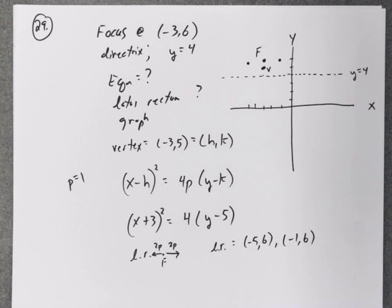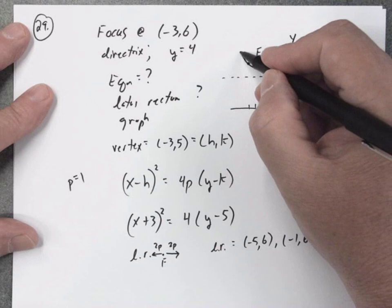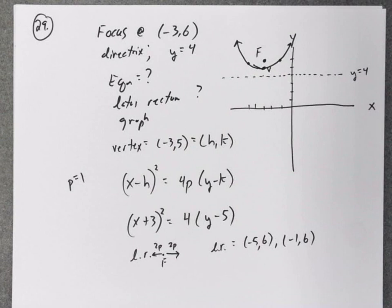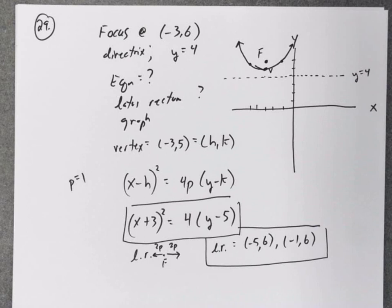I just want to check to make sure, and that is correct. So now, we can try and make a sketch of the parabola. There's the equation, here's the points of the latus rectum, and then up here is the graph.